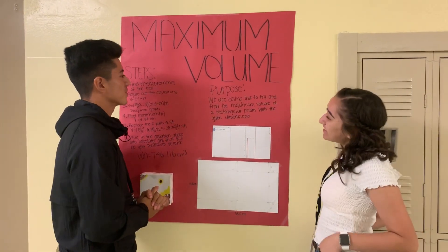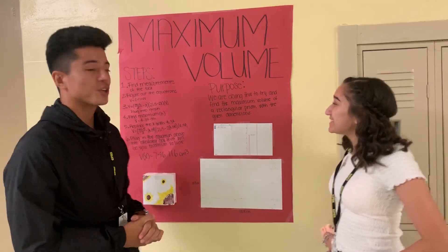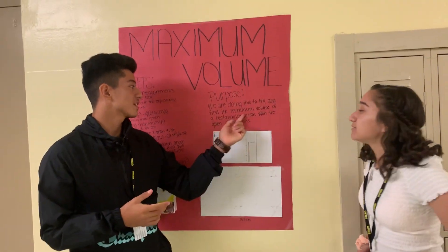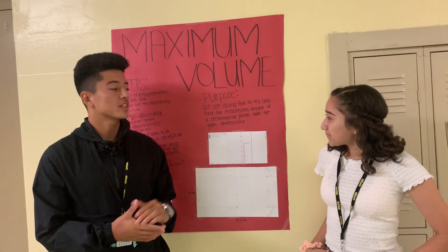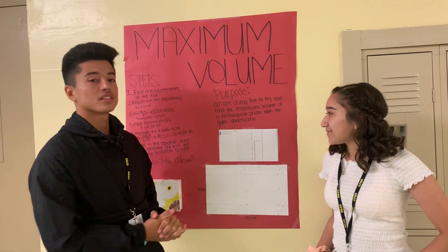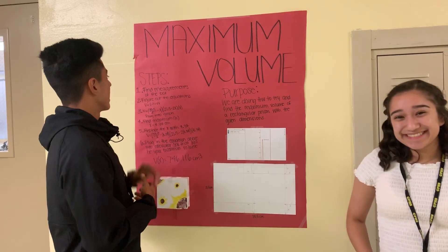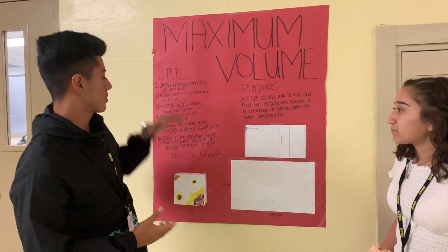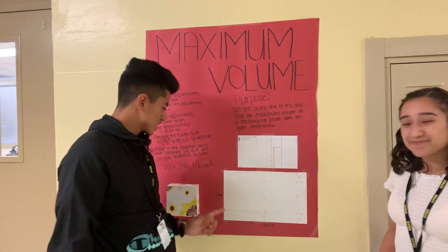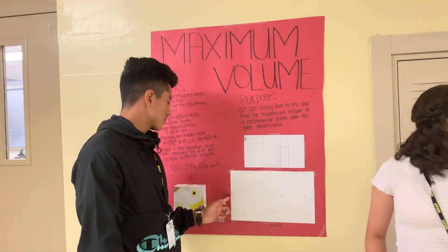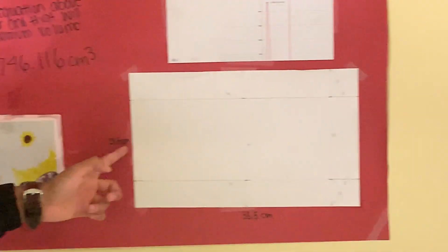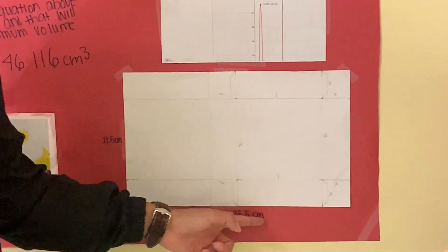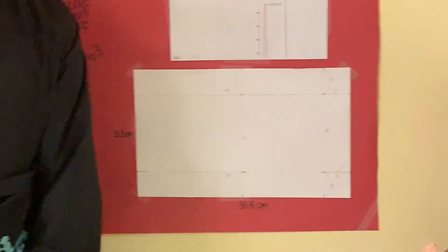The purpose for this is that we're doing this to try and find the maximum volume over a container, given the dimensions. The first step is to find the measurements of the box. This side is going to be 21.5 centimeters and this side is going to be 35.5 centimeters.